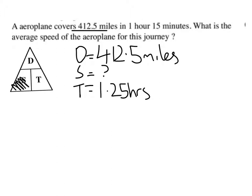Cover up the one that we want to find out. And it gives us the equation speed is equal to distance over time. Substitute in our values, so 412.5 over 1.25.